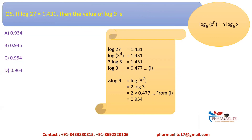Therefore, log 9 can be written as log(3^2). Applying the formula, the power 2 is brought before log and the value of log 3 = 0.477 is substituted. We get log 9 = 0.954, which is option C.